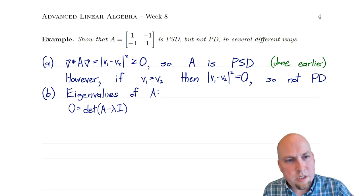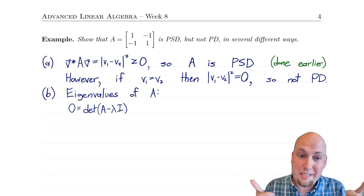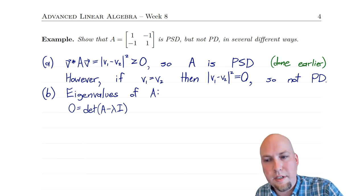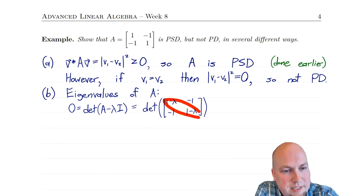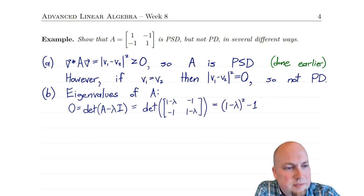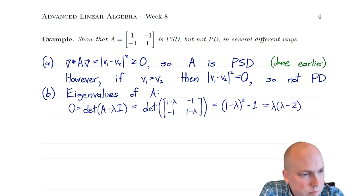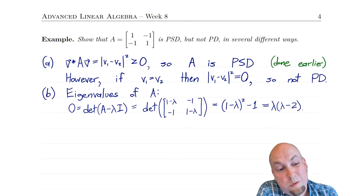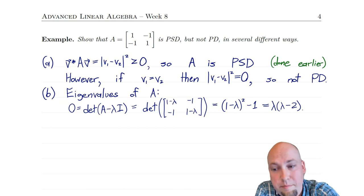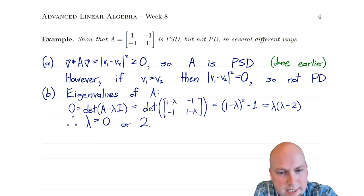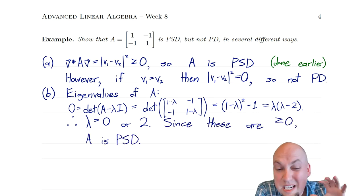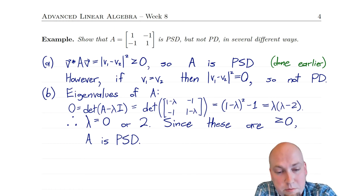Using Property B: we check eigenvalues. We set det(A - λI) = 0. Computing the determinant gives (1 - λ)² - 1, which expands and factors to λ(λ - 2). Setting this equal to zero, the eigenvalues are λ = 0 and λ = 2. Both are bigger than or equal to zero, confirming A is positive semi-definite. However, since one eigenvalue is zero — not strictly positive — A is not positive definite.